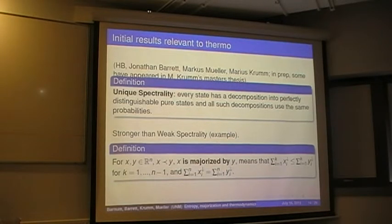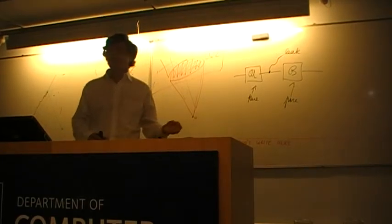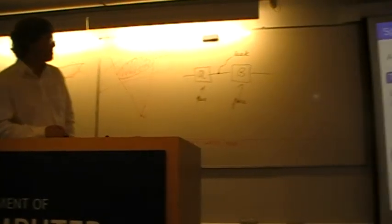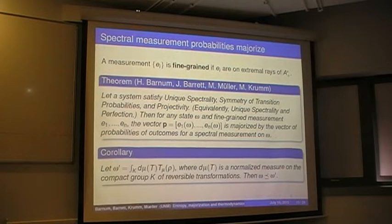To state our majorization result then, we need the postulates, the premises of the theorem. And one of them is unique spectrality. Every state has a decomposition into perfectly distinguishable pure states, and all such decompositions use the same probabilities. So this is the thing, for instance, that Carlo Maria said is in the forthcoming paper. Not only do you have this decomposition, but the probabilities are unique. It's stronger than weak spectrality, which doesn't assume it's unique. Majorization has been defined by several people at this conference. A measurement is fine-grained if the effects in the measurement are on extremal rays of the cone, and those are just the rays generated by extremal points of the normalized states.